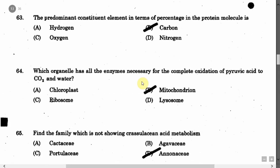The next question is: The predominant constituent element in terms of percentage in the protein molecule is — Option A: Hydrogen. Option B: Carbon. Option C: Oxygen. Option D: Nitrogen. The correct answer is Option B, that is Carbon.